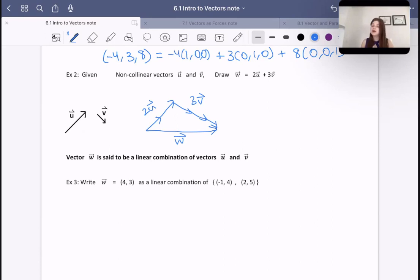So vector w is said to be a linear combination of vector u and vector v, right? Vector w is equal to 2 vector u's, right, plus 3 vector v's.